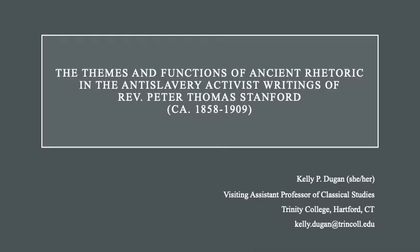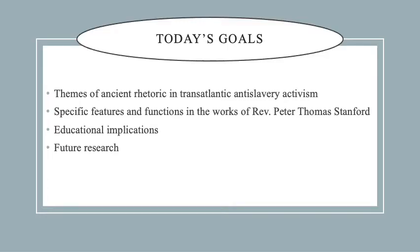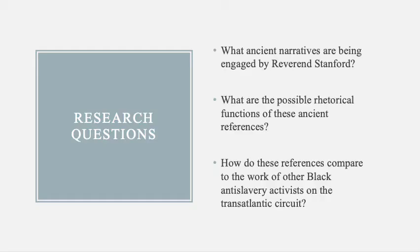My talk today is titled 'The Themes and Functions of Ancient Rhetoric in the Anti-Slavery Activist Writings of Reverend Peter Thomas Stanford.' The purpose is to examine Reverend Stanford's engagement in ancient Mediterranean rhetoric, particularly Greek and Latin references. I'll begin with an overview of classical rhetoric in 19th century transatlantic abolitionist activism, then focus on Stanford's text 'The Tragedy of the Black Person in America,' published in 1897, ending with implications for teaching such texts in global education today.